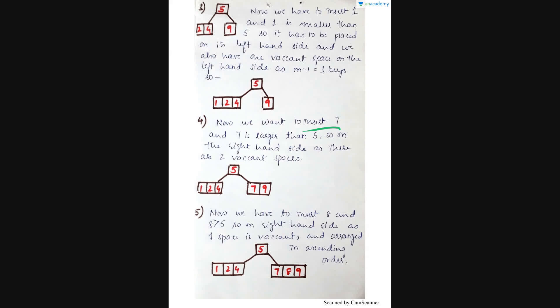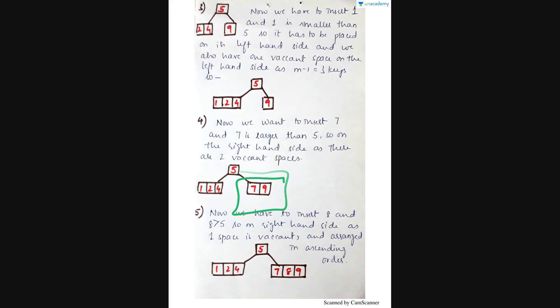After 1, we have to insert 7. Since 7 is greater than 5, and next to 5 only one element is filled with still 2 places vacant, we can directly place 7 and arrange in ascending order: 7 and then 9. Then we have to insert 8. Since 8 is greater than 5 it goes on the right hand side, where only 2 key nodes are filled so one key node is vacant. We arrange it in ascending order and place it there.